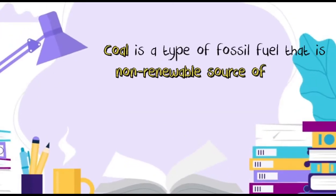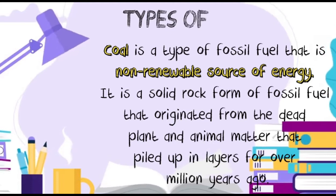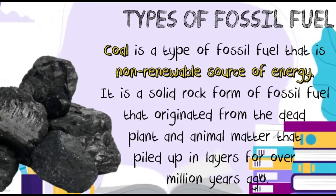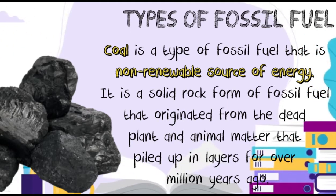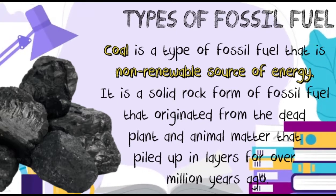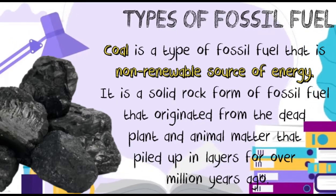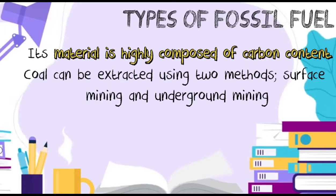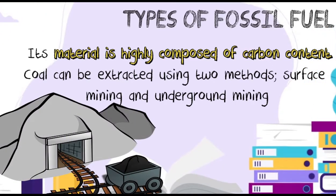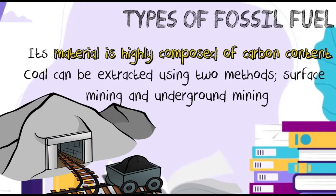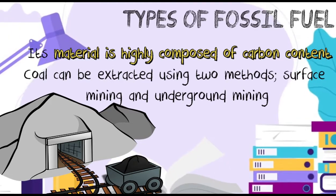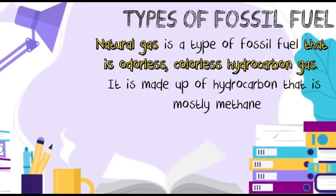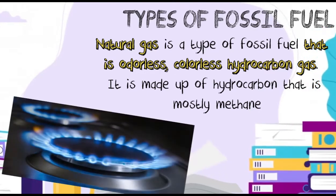Coal is a type of fossil fuel that is a non-renewable source of energy. It is a solid rock fossil fuel that originated from the dead plant and animal matter that accumulated in layers over a million years ago. It is naturally highly composed of carbon. Coal can be extracted using two methods: surface mining and underground mining.